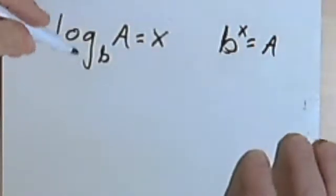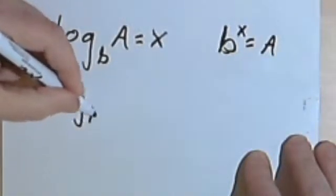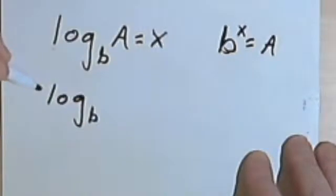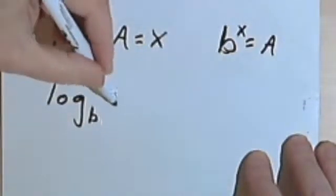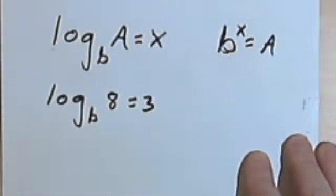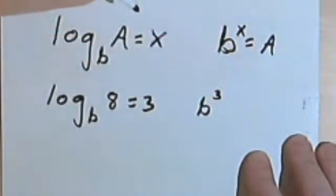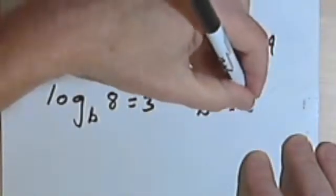So if you're comfortable with that, let's try one where I'm looking for the base. The log base b of 8 equals 3. So I'm gonna take the base, the b, raise it to the third power, and that equals 8.